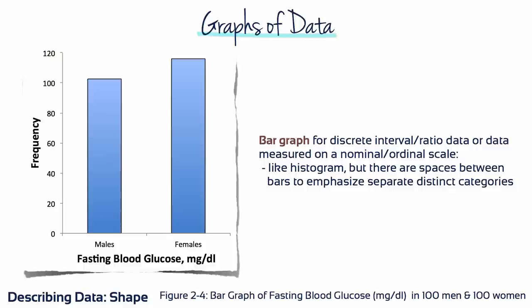Bar graphs are much like histograms, except that the rectangular bars are separated from one another, while those in histograms touch. The separation between bars reflects the separation or break between the whole numbers or categories being summarized. For this reason, bar graphs are appropriate for distributions of discrete interval or ratio data, as well as data measured in a nominal or ordinal scale.